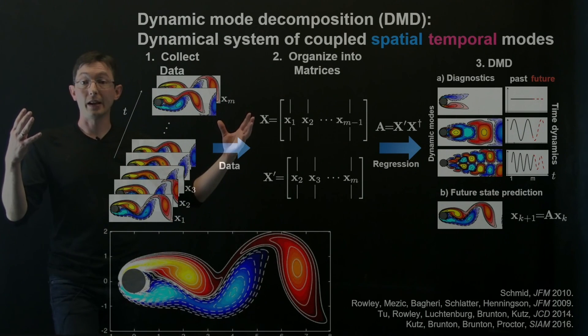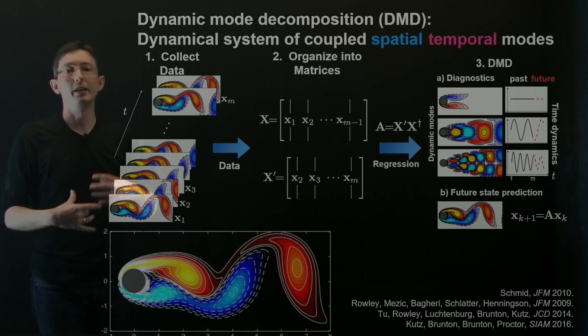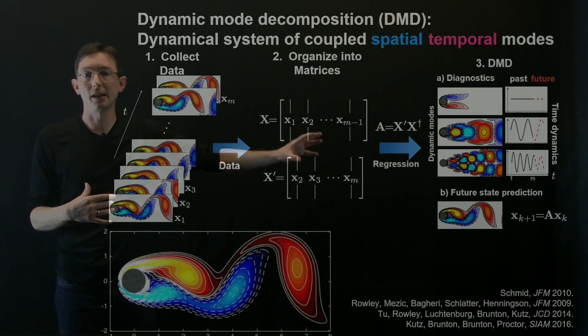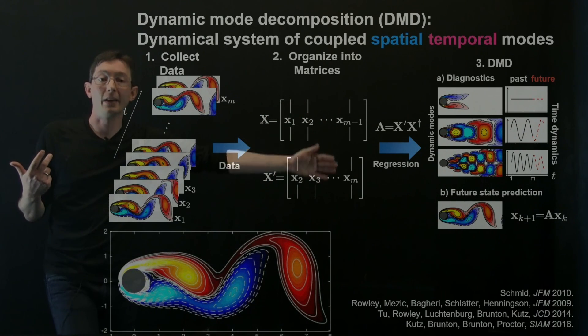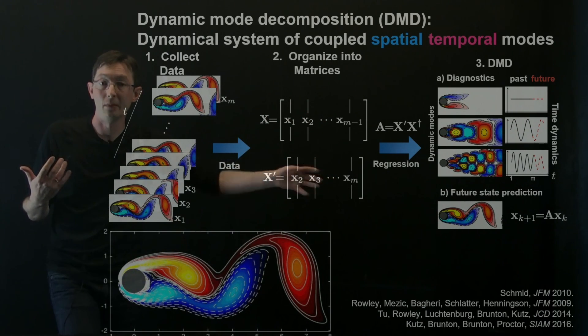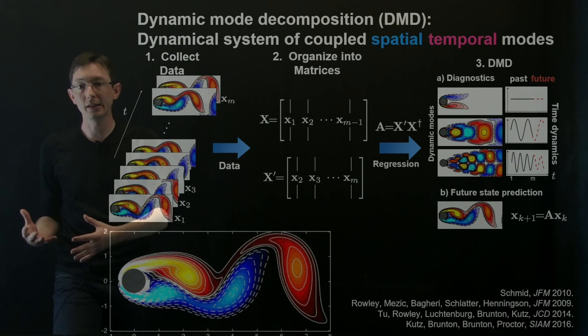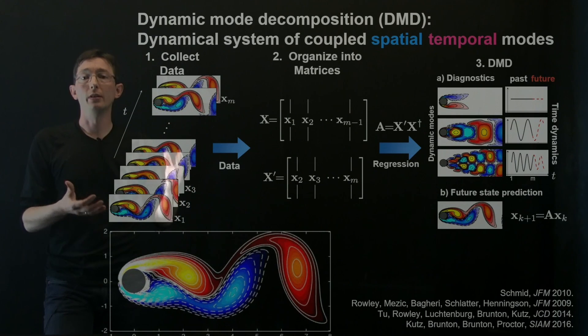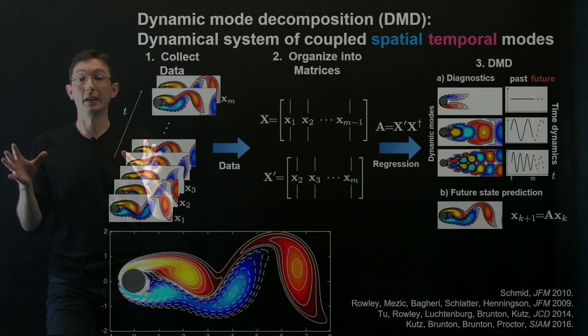So basically that's the Dynamic Mode Decomposition in a nutshell. There's a lot more under the hood. There's tons of extensions of this for what if I didn't have full state measurements, what if I didn't have measurements that were resolved in time, what if I'm actively trying to control my system, what if I have noise. We'll talk about all of those and we'll code it up on a few examples in the upcoming videos. Thank you.